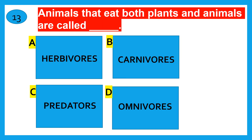Animals that eat both plants and animals are called — herbivores, carnivores, predators, or omnivores? The correct answer is omnivores.